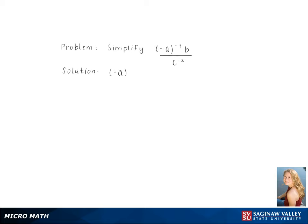To simplify negative a to the negative 4th b over c to the negative 2, we use the formula below and multiply 1 over negative a to the 4th times b times c squared, making the exponents positive. Simplifying gives us bc squared over a to the 4th, which is our final answer.